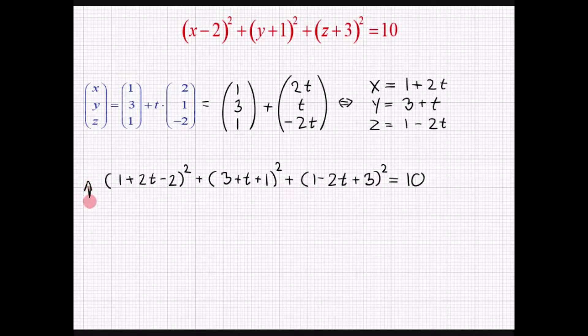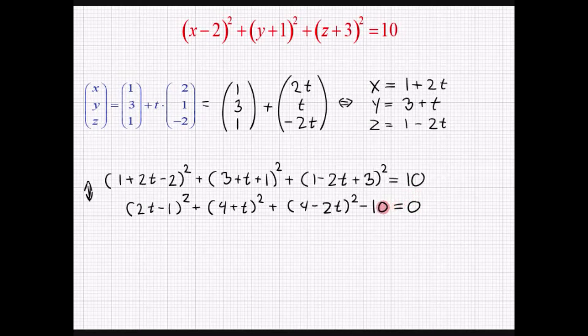Herefter reducerer vi det der står ind i parentheserne, så vi herefter nemt kan gange parentheserne ud. Vi har altså 2 gange t minus 1 i anden. Og i det næste parenthes, der har vi altså 4 plus t i anden. Plus 4 minus 2 gange t i anden. Og vi flytter konstanten 10 på venstre siden af ligehedstegnet. Og nu kan vi altså gange parentheserne ud.